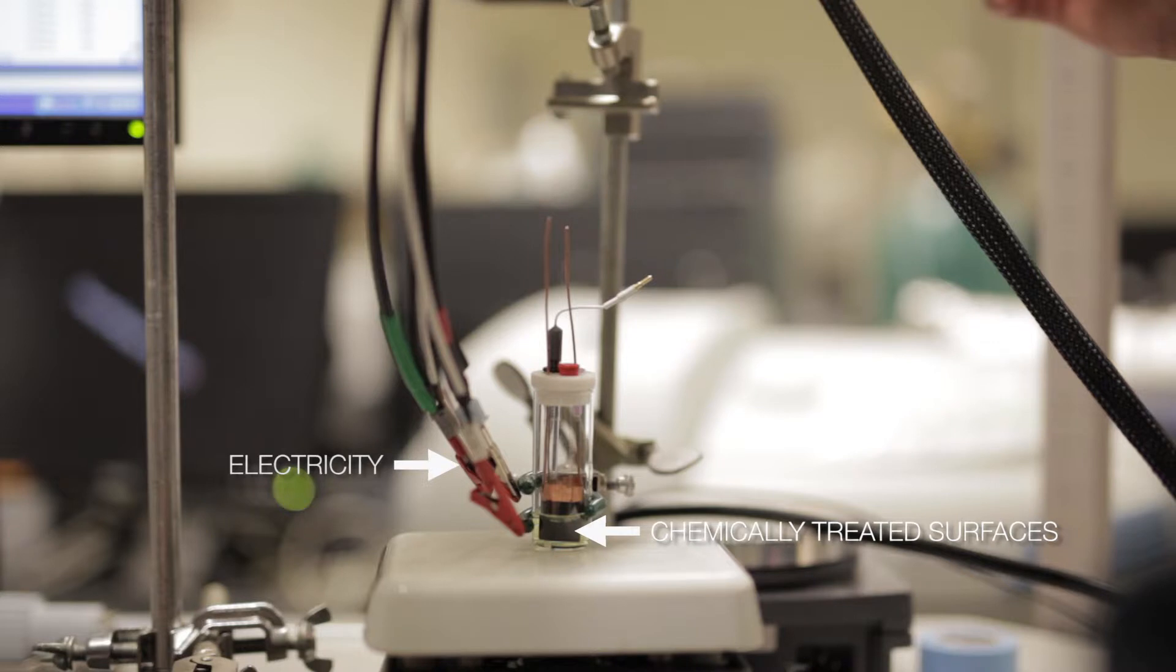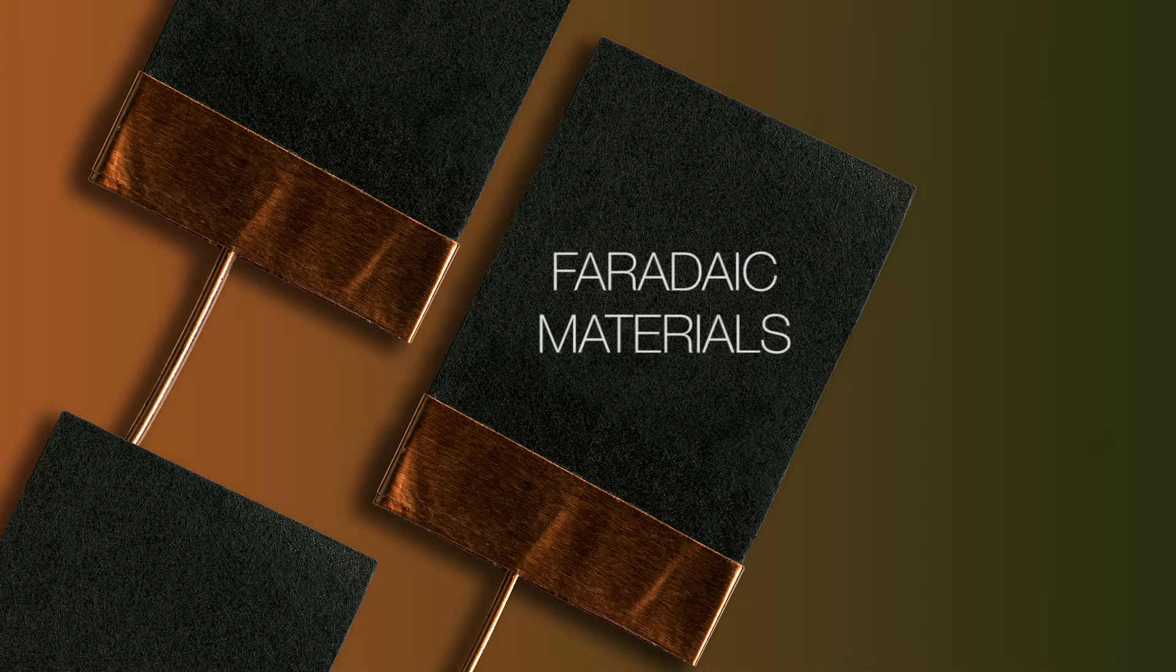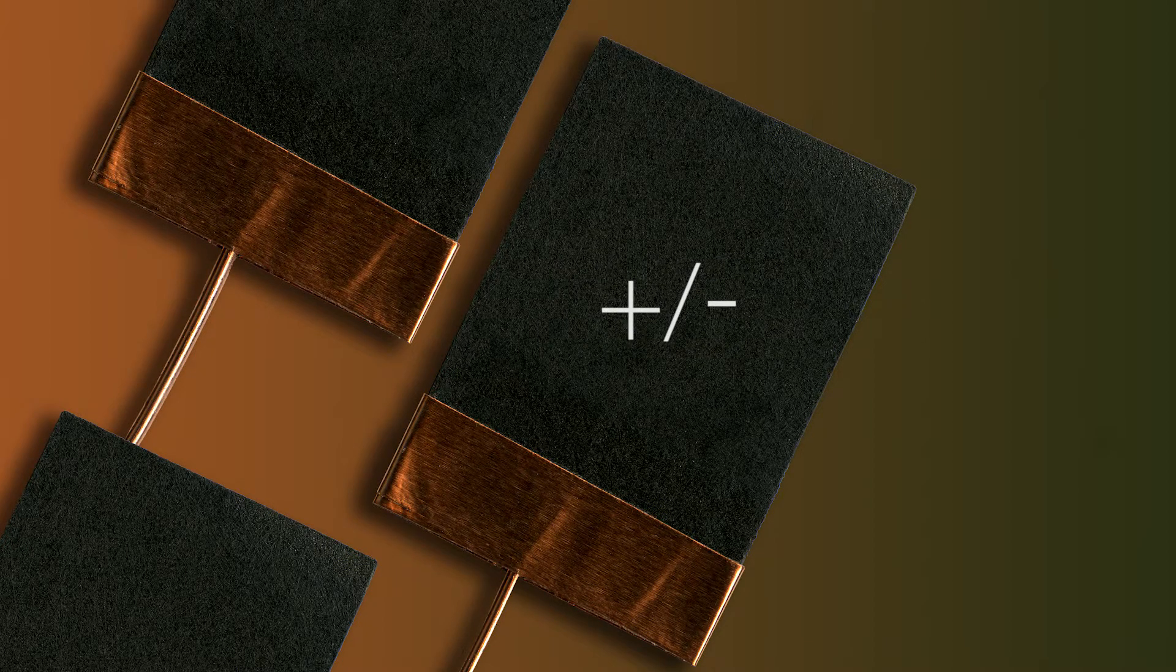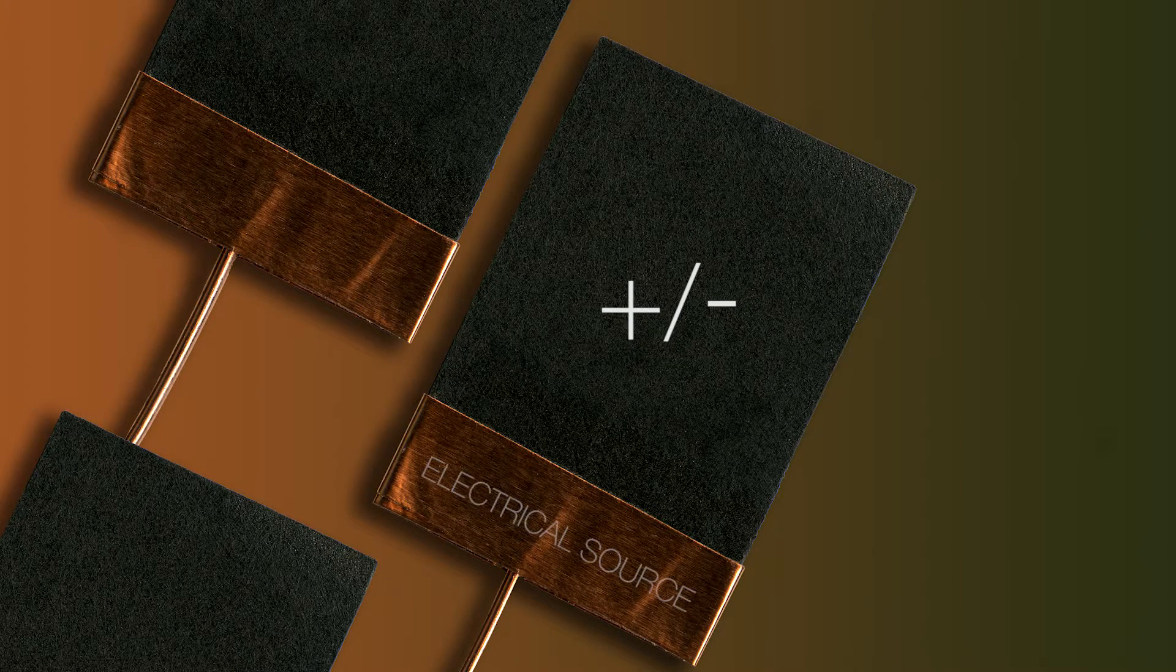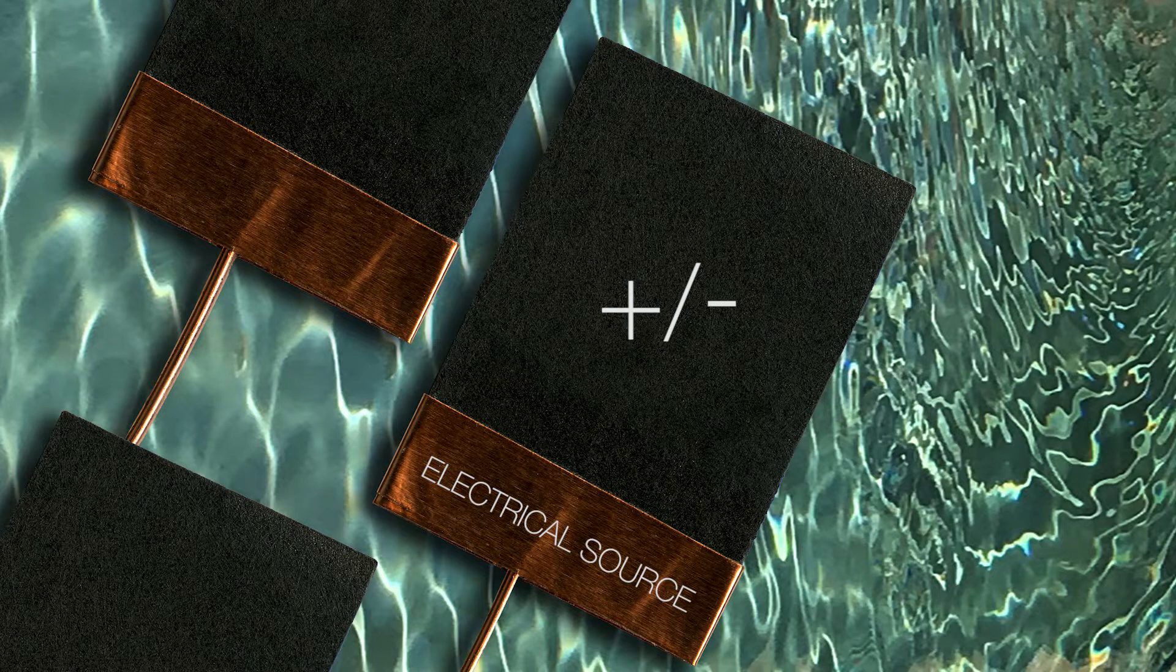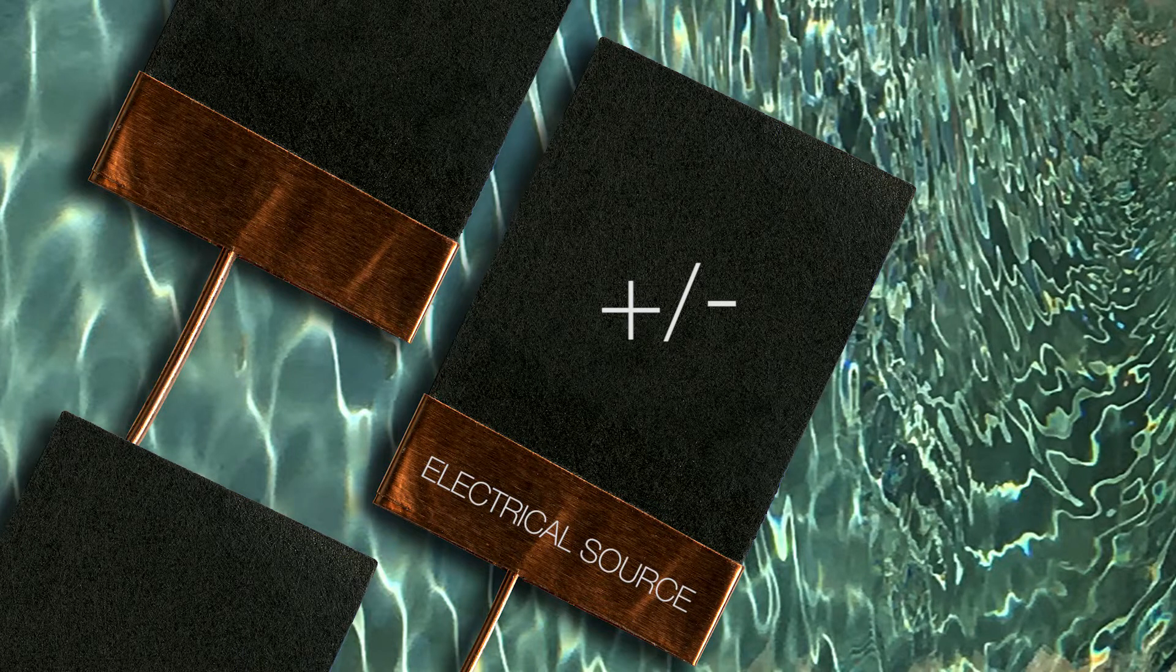Here's how the system works. First, surfaces are coated with what are known as faradaic materials, which are materials that can undergo reactions to become positively or negatively charged. Then, an electrical source is added. As water flows between these now chemically treated electrodes, the surface materials can be tuned to bind strongly with a specific type of pollutant molecule.